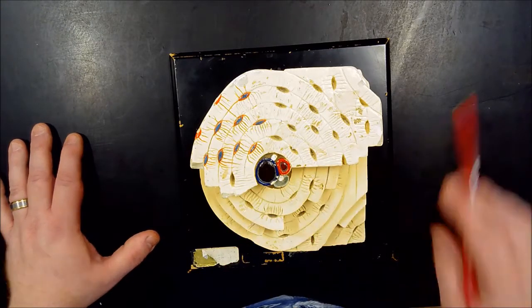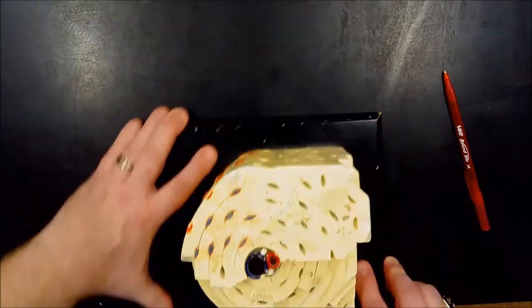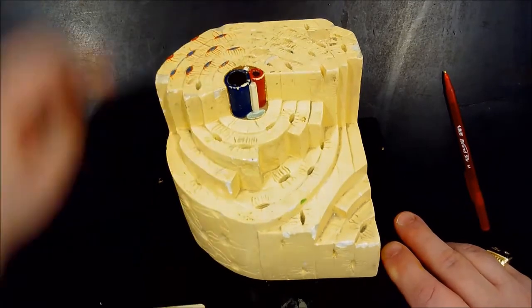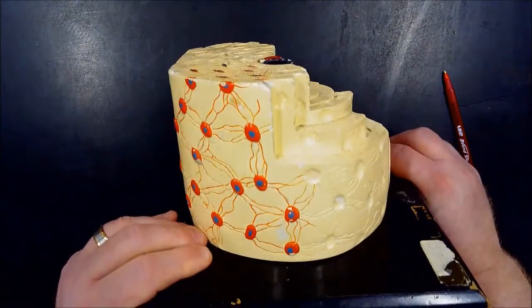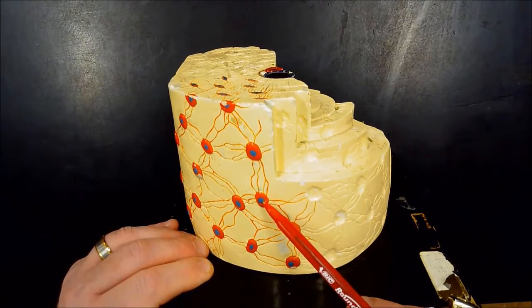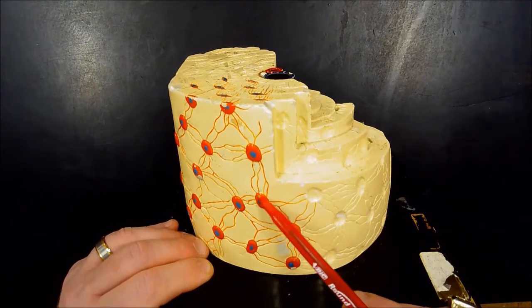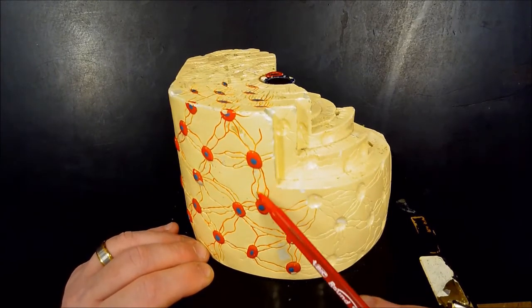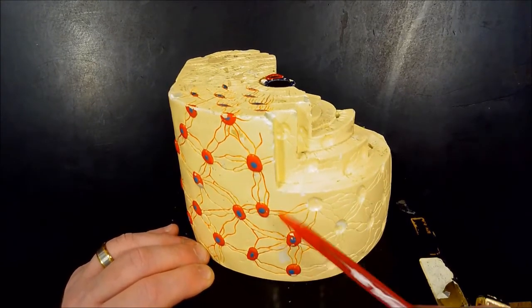The osteocytes or lacunae are on all the lamellae, these concentric rings. The blue is going to be the osteocytes, the reddish area is going to be the lacuna.